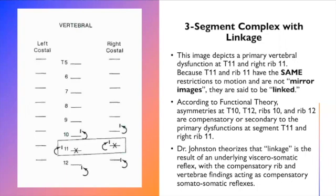This is Dr. Johnston explaining what he calls a three segment complex with linkage. In this diagram, he shows a primary vertebral dysfunction at T11 and right rib 11 because T11 and rib 11 have the same restrictions. Again, those restrictions can be rotation or side bending because the restrictions are the same. He's saying that this vertebral segment and this rib, they are not mirror images. They are linked. And again, that nomenclature is used only by Dr. Johnston in describing his functional theory.